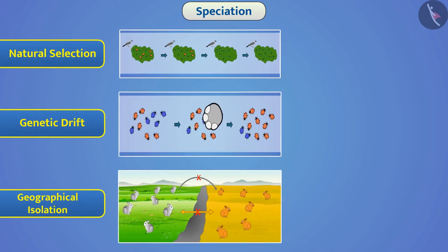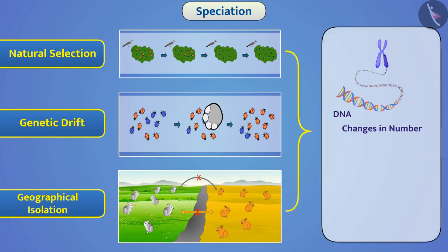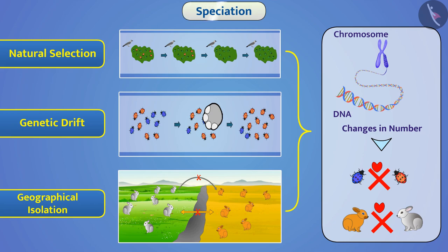In these three situations, speciation can happen in different ways, like changes in DNA or change in number of chromosomes. Then, the gametes of both groups cannot fertilize, thus resulting in speciation.